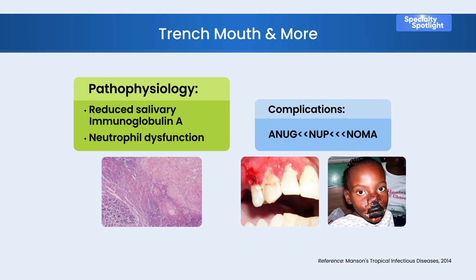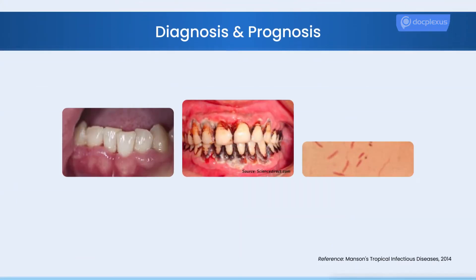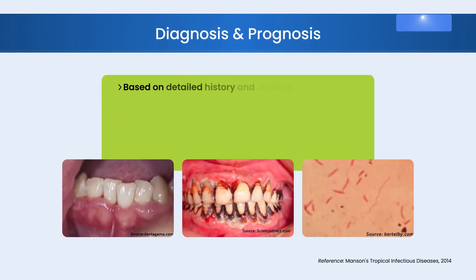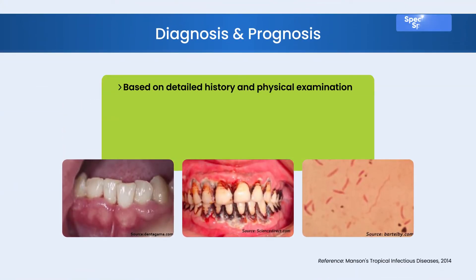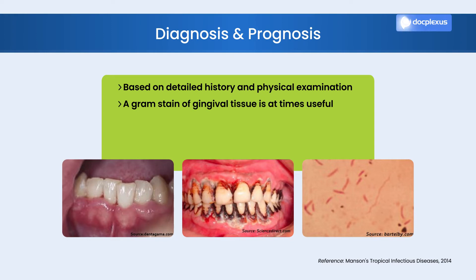The histopathology shows the bacterial zone, the neutrophil-rich zone, the necrotic zone and the spirochetal zone of infiltration. Diagnosis of ANUG is largely based on physical examination. A gram stain of gingival tissue, as illustrated, can at times support the diagnosis but is not always used.